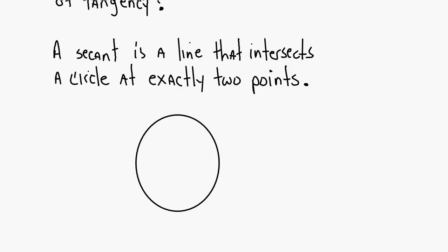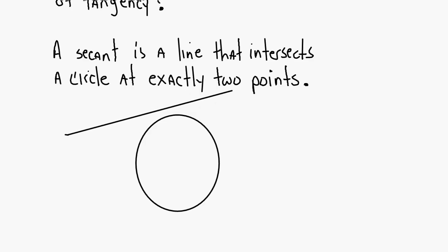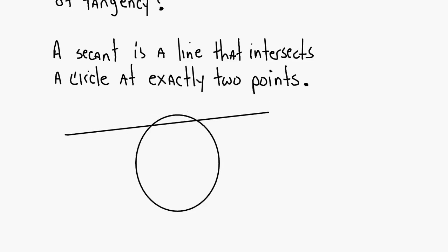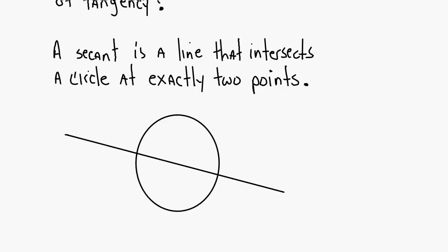So if you've got a circle, take a look at this moving line right here. Is it touching the circle yet? No, so it's called a line. Now what is it called? Still a line. How about now? Now it's a tangent. Now it's a secant — it intersects the circle in two places. Now it's a tangent again.